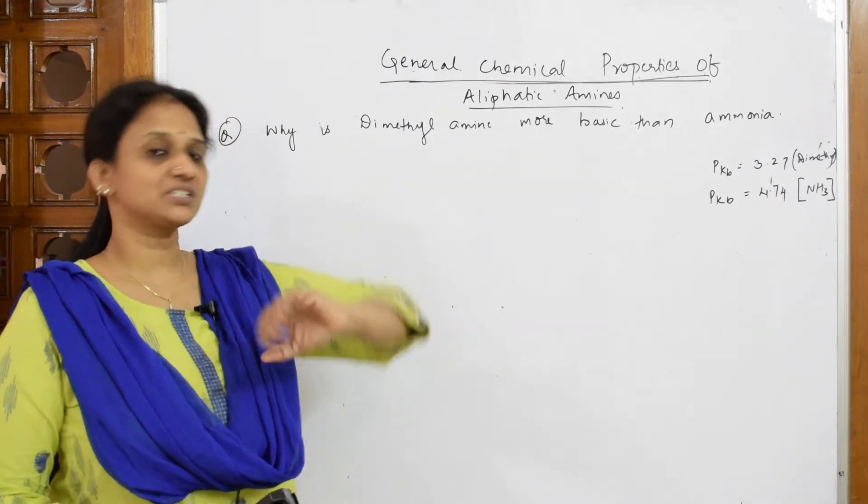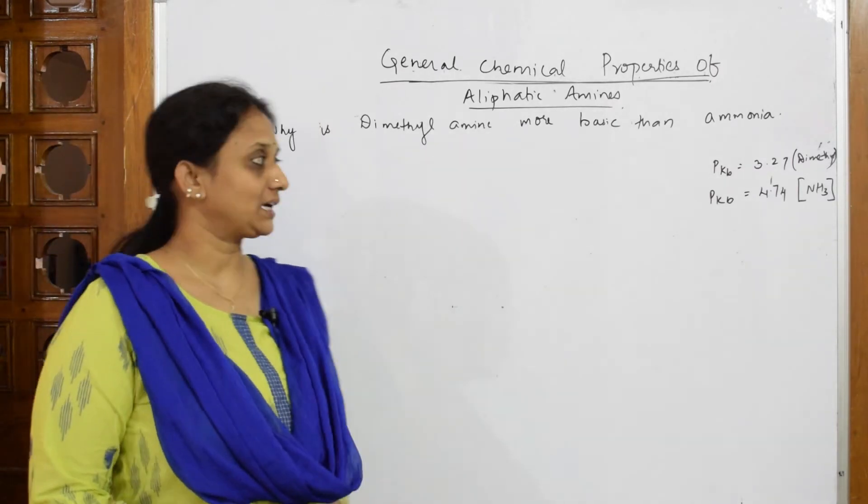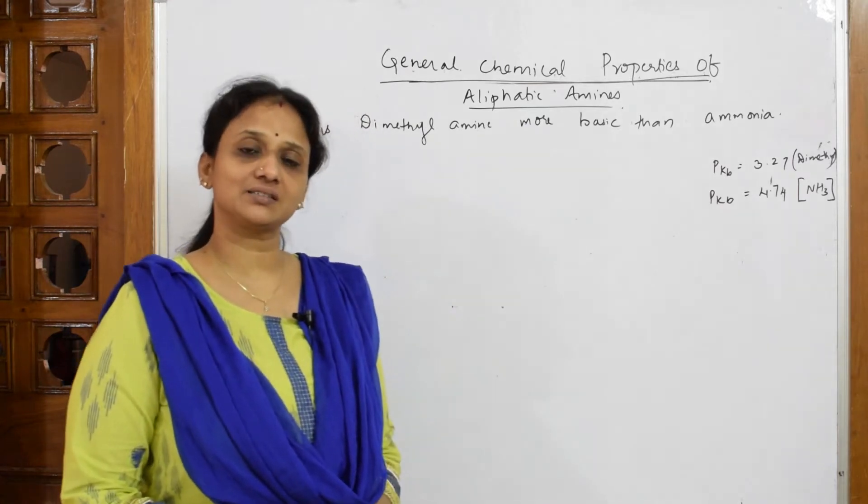If one question is given to us like this, why is dimethyl amine more basic than ammonia? Sure, they have given us PKB value. So blindly I can write the answer, isn't it?